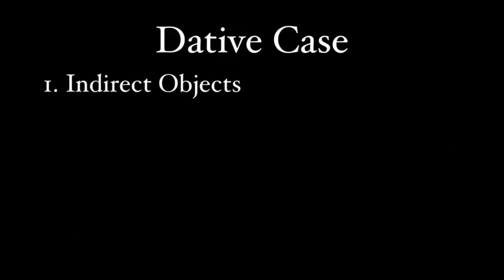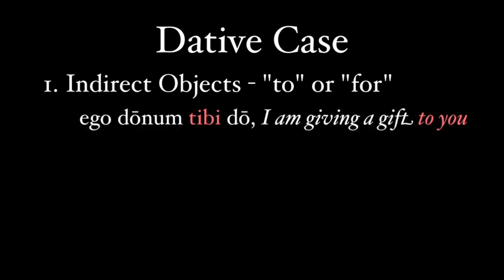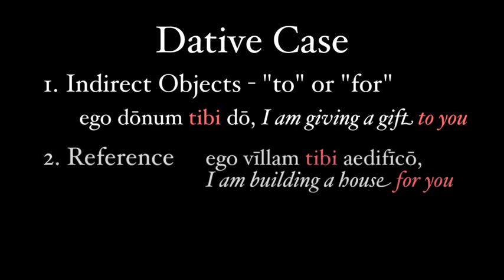The dative case is used for indirect objects, and we often use the words 'to' or 'for' when we translate. The indirect object is the word that receives the direct object. 'Ego donum tibi do' — I am giving a gift to you. Tibi is in the dative case because it is the noun receiving the gift. We can also translate certain datives with 'for': 'Ego villam tibi aedifico' — I am building a house for you. You can think of the dative tibi as still receiving the house, the direct object, but more like a reference — I'm building a house, and it's to your benefit.